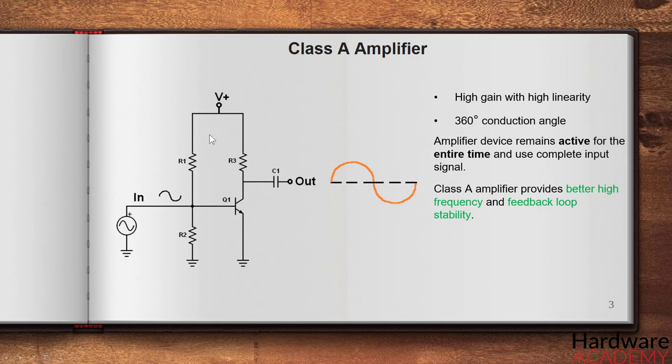Other than disadvantages, class A amplifier is easy to construct with a single device component and minimum parts count. Despite the advantages and high linearity, certainly it has many limitations.